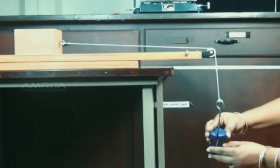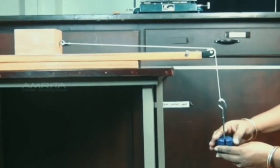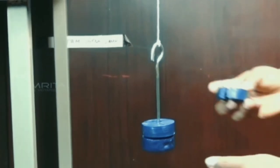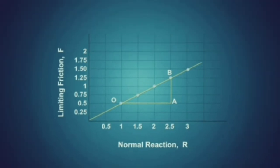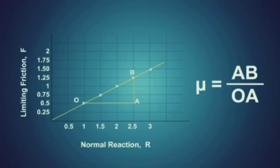The coefficient of static friction is then calculated by the equation mu equals F divided by R. Repeat the experiment with different masses on the block, and in each case mu is calculated and found to be a constant for the given pair of surfaces. The graph between limiting friction and normal reaction is a straight line. The coefficient of friction is also calculated by measuring the slope of the graph: mu equals AB by OA.